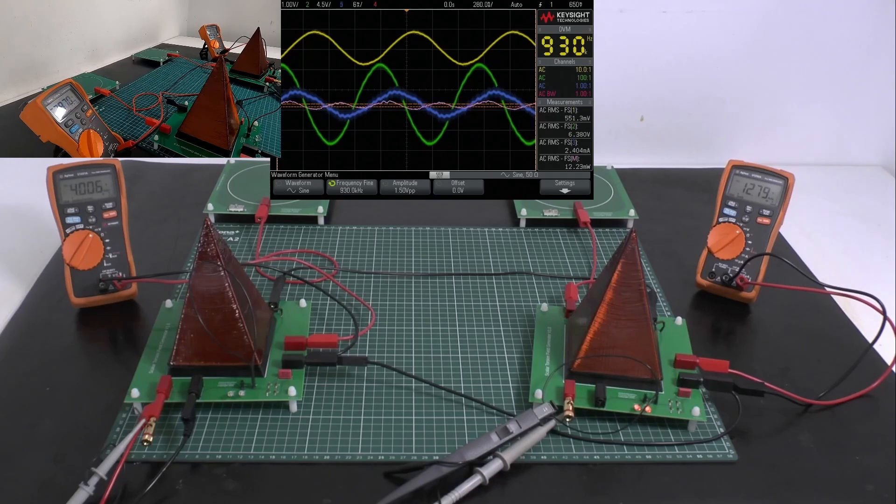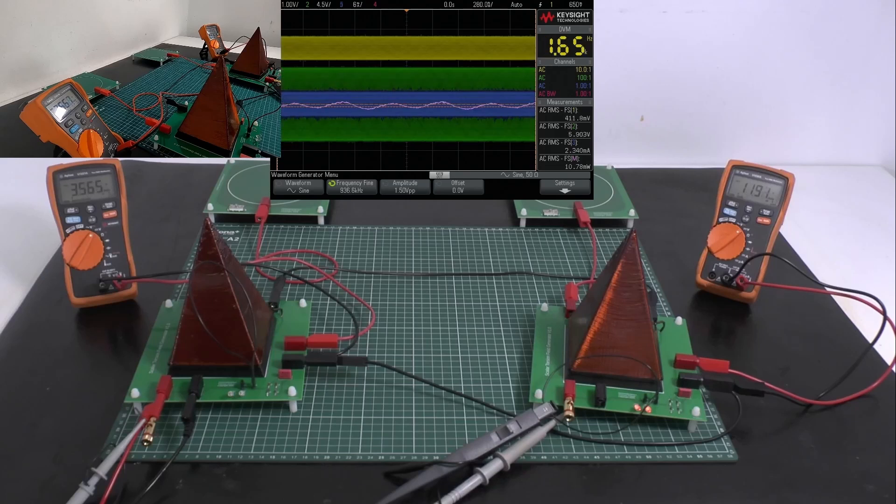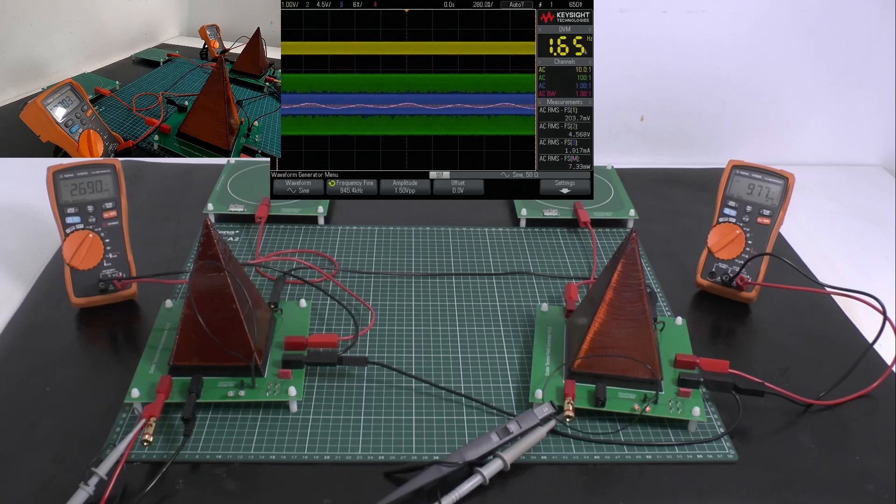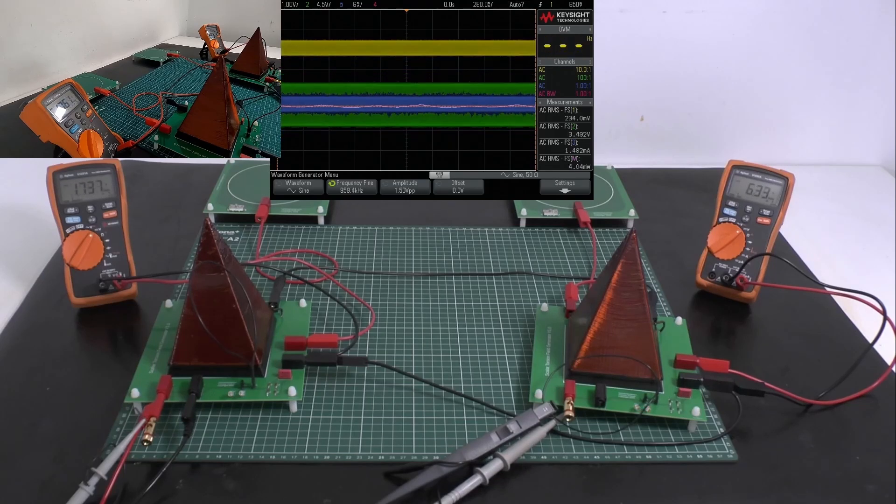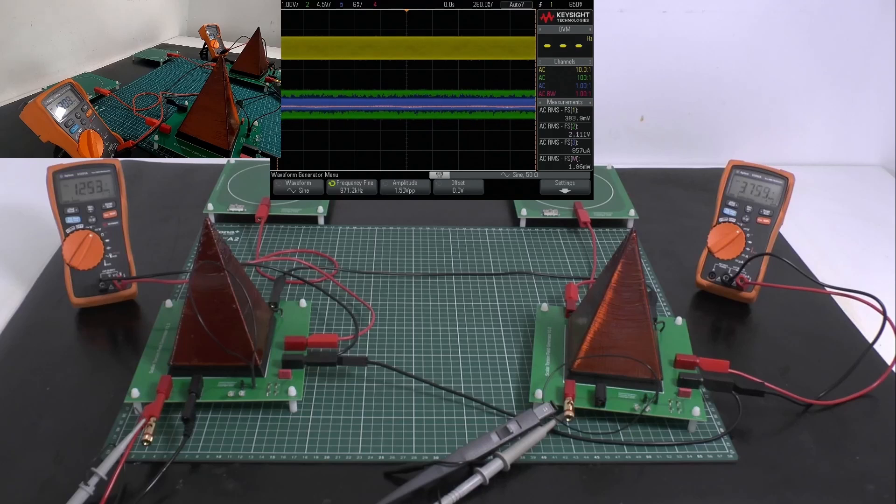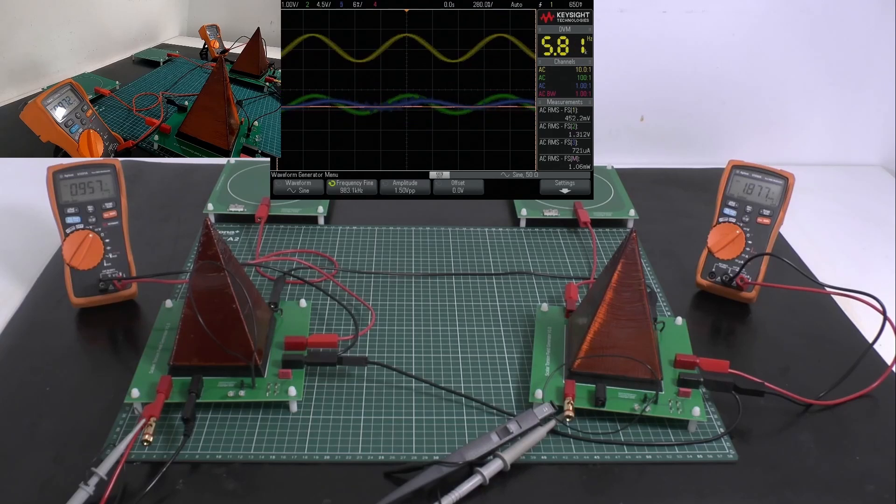We have 50 ohm output from the oscilloscope. Now we go up in frequency.